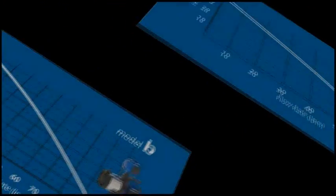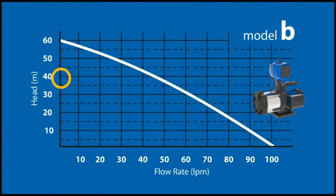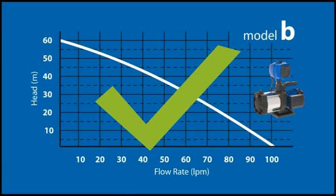Let's try the pump curve for model B. Again, find 39 metres on the head or vertical axis, and run an imaginary line across the graph till you meet the pump curve. Then draw a line straight down to the flow rates. Is this pump able to produce the flow rate required at the pressure you require? In the case of model B, the answer is yes. This means model B has both the pressure and flow rate to meet Aunty Flo's needs.